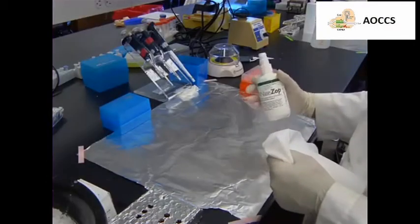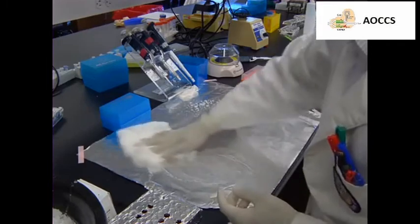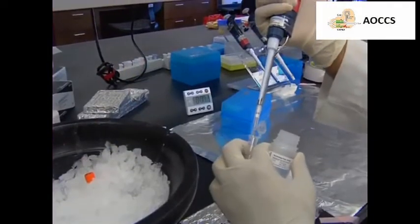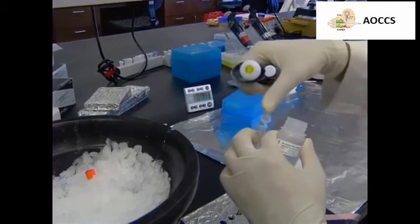First, spray the working area and pipettes with RNA Zap. To begin cDNA synthesis, dilute the template RNA samples to a concentration of 5 ng per microliter with nuclease-free water.